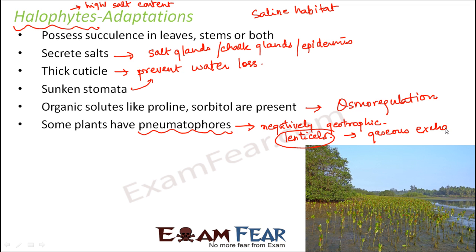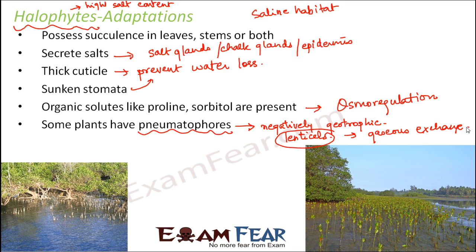Looking at a picture of pneumatophores, you can see small roots emerging out of the water in mangrove plants — plants growing in marshy regions. These are the pneumatophores. They have small lenticels which help in gaseous exchange. This is another important adaptation of halophytes.